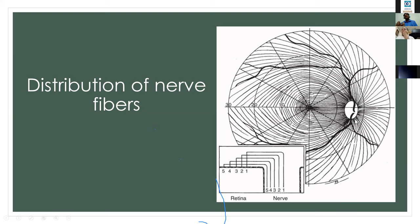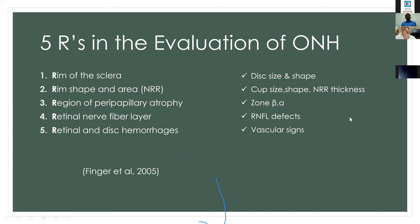The Five R's in evaluation of the optic nerve head are: the rim of the sclera (disc size and shape), the rim shape and area (neural retinal rim — indirectly giving the cup size, shape, and NRR thickness), the region of peripapillary atrophy (zones beta and alpha), the retinal nerve fiber layer, and retinal and disc hemorrhages. This fancy term was introduced by Finger et al. in 2005.